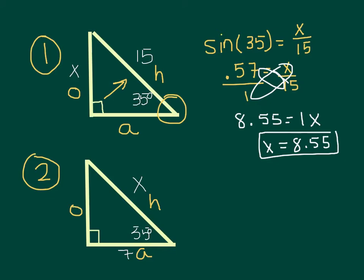This time, since I know the adjacent and I'm looking for the hypotenuse, I'm going to use the cosine. So the cosine of 35 is going to equal 7 over X. Notice now that this time the X, our variable, is in the denominator.